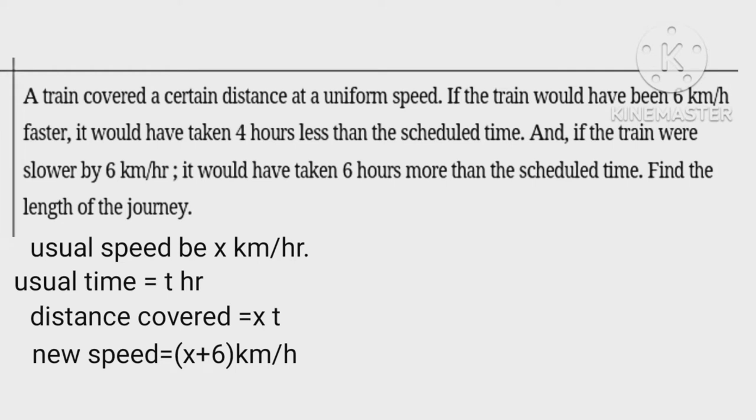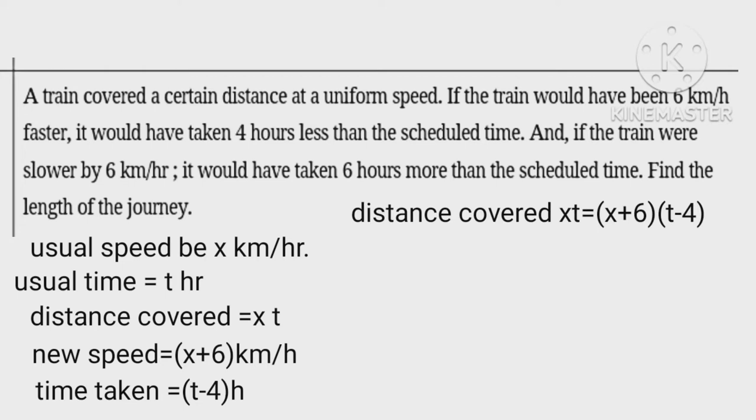Therefore distance covered xt equals (x plus 6)(t minus 4), implies that xt equals xt minus 4x plus 6t minus 24. Therefore 4x minus 6t equals minus 24. This is equation first.